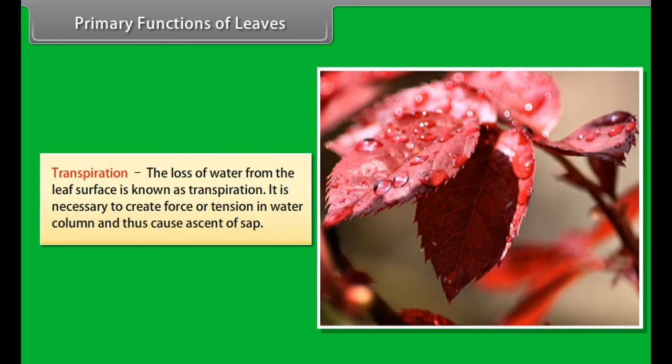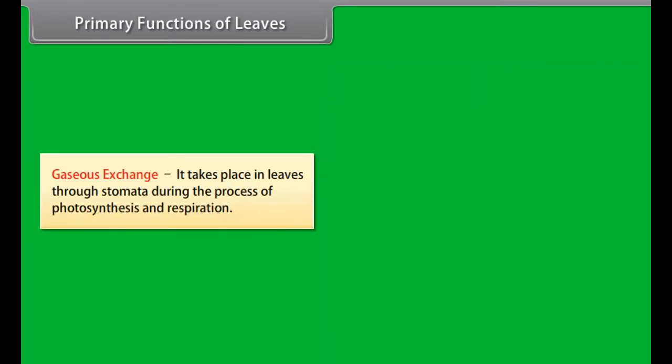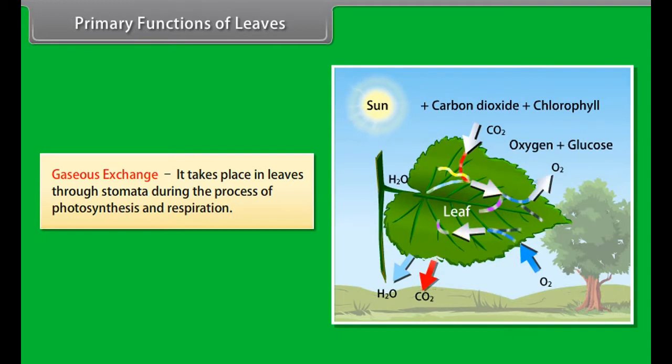Food storage: Food is stored in the leaves of Allium cepa. The leaves become fleshy and juicy due to storage of water, mucilage, and food material in Aloe and Portulaca.